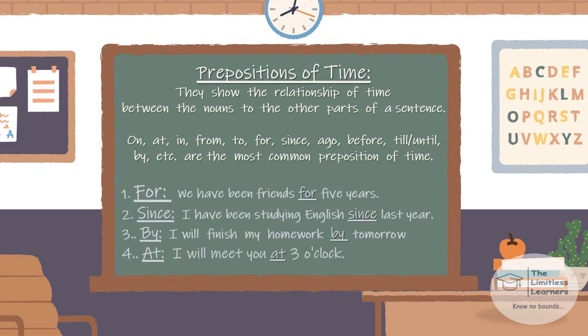Prepositions of time show the relationship of time between the nouns and the other parts of a sentence. Common ones include: on, at, in, from, to, for, since, ago, before, till, until, by, etc. Examples: 'We have been friends for five years.' 'I have been studying English since last year.' 'I will finish my homework by tomorrow.' 'I will meet you at three o'clock.'